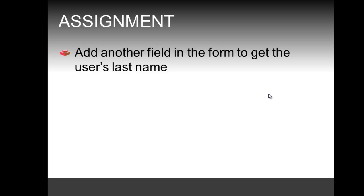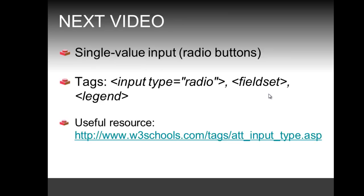This was the very first simple example of coding a web form. The assignment is to add another field to get the user's last name — I'll show one solution in the following video. The following video will also add a single-value input known as radio buttons, and we'll expand to the fieldset and legend tags. A useful resource link for that information is provided, but all of that until the next video.